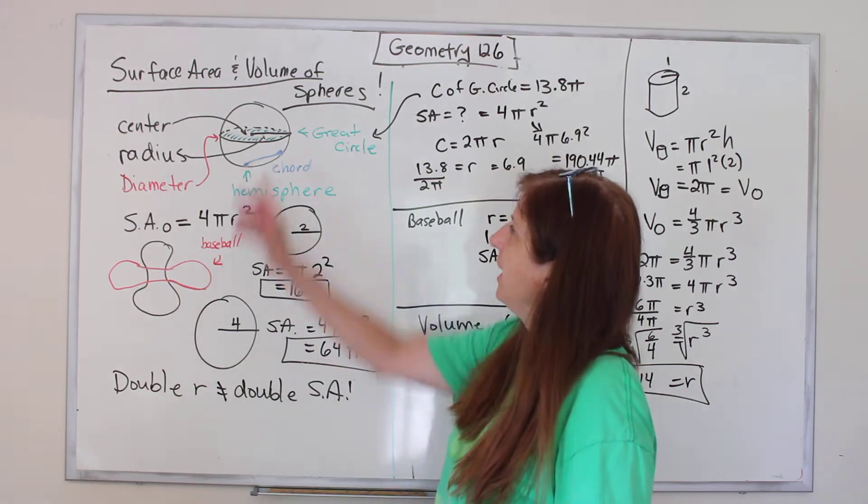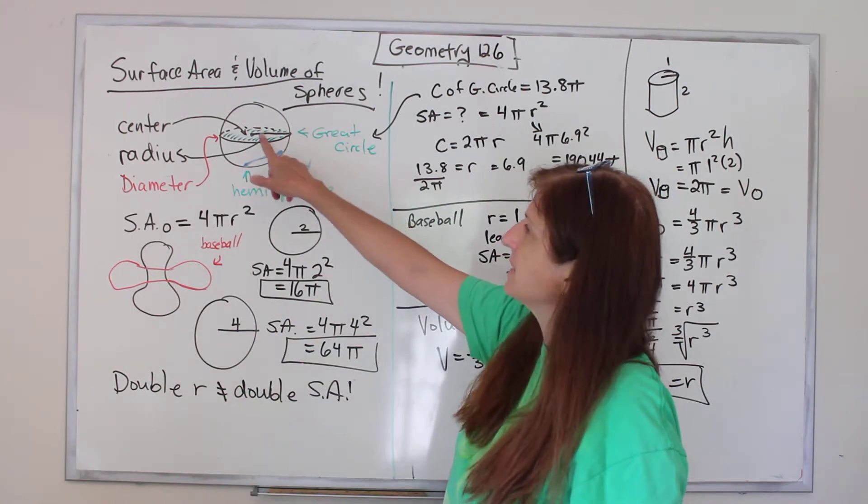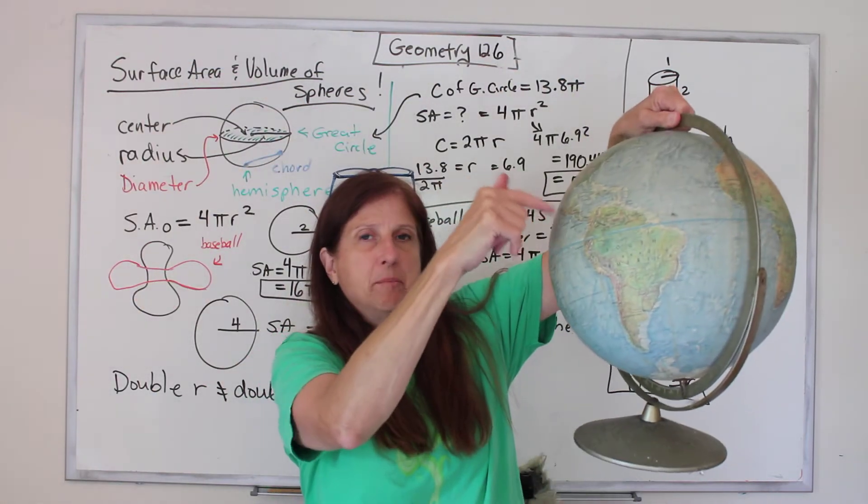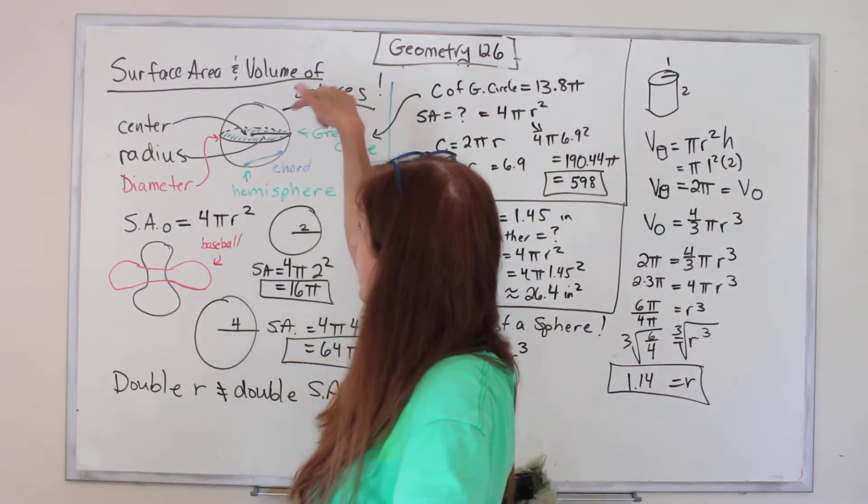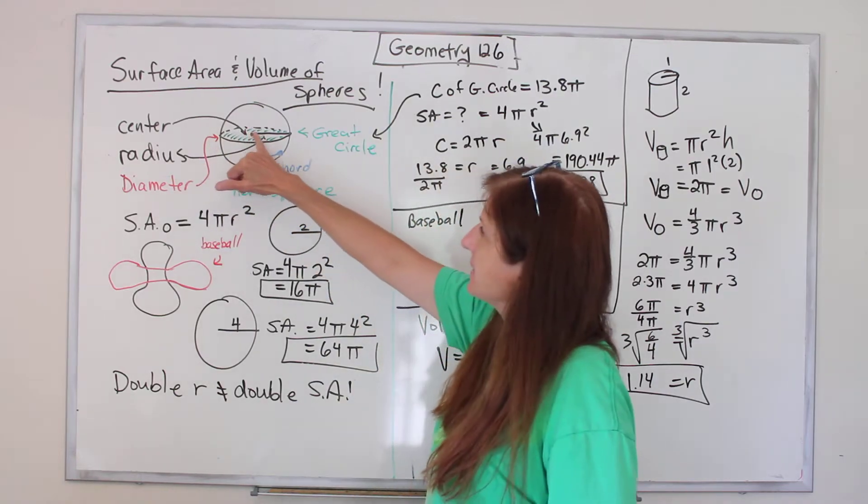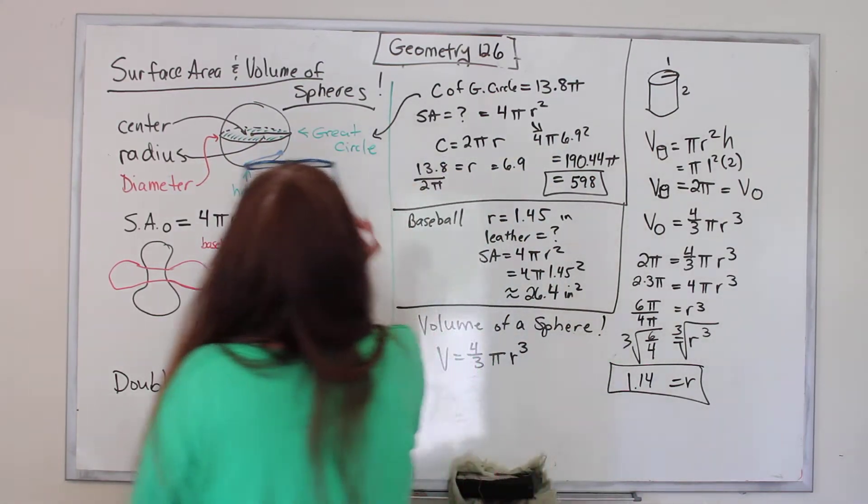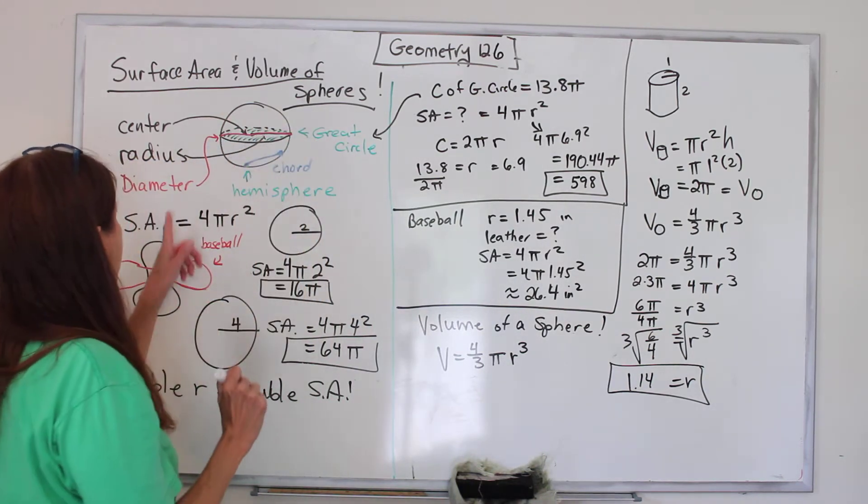A sphere is a ball, like the globe here. The center is if you stick something all the way to the very middle on the inside. If you draw a line from that center to the side, it's the radius. If you draw a line all the way across, it's the diameter.